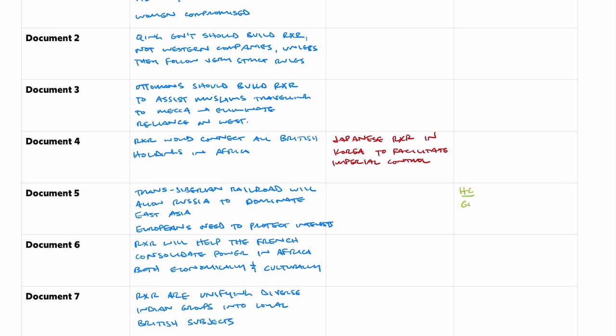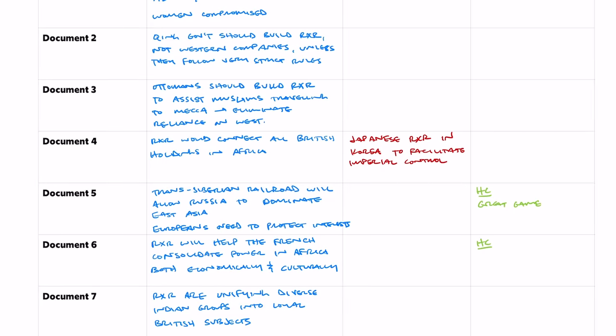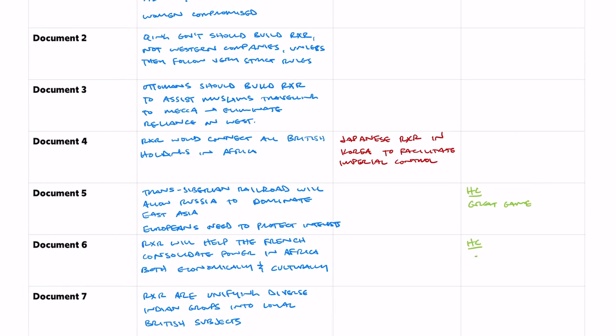The last thing in document work is to make sure we have some solid sourcing before moving on — you only have to do it three times. Document five made me think of the historical context of the Great Game between Britain and Russia competing to establish dominance over Afghanistan. Document six, about the French consolidating power in Africa economically and culturally, made me think of the 'civilizing mission' — well summed up in Rudyard Kipling's poem 'The White Man's Burden.' Document seven made me think about point of view, because the British officer talks about railroads unifying diverse Indian groups — but of course he would say that because of the resistance movements like the Indian National Congress. Depending on how I write the sentence, that might be historical context or point of view, but it's a good piece of sourcing information.